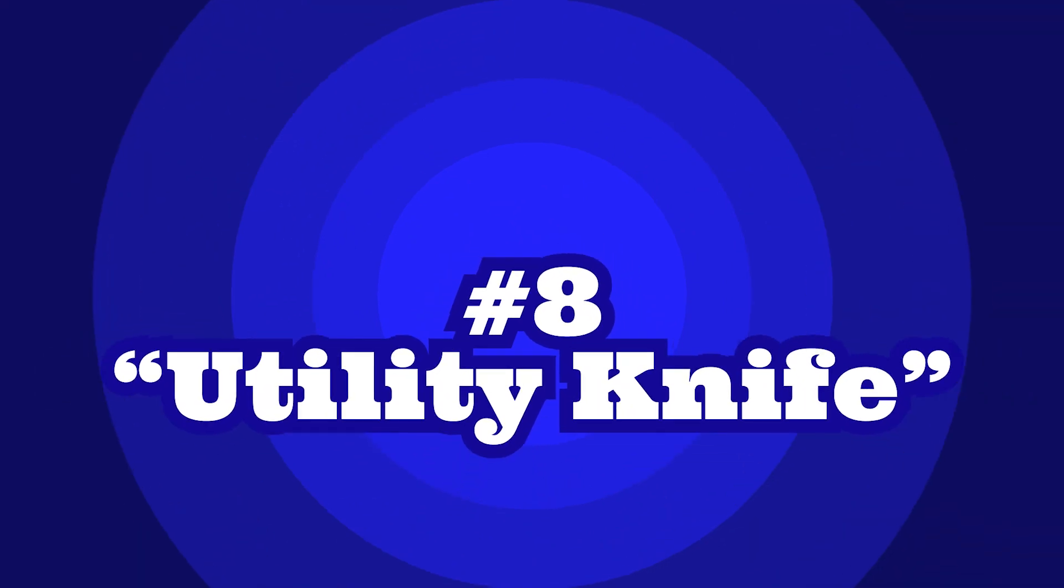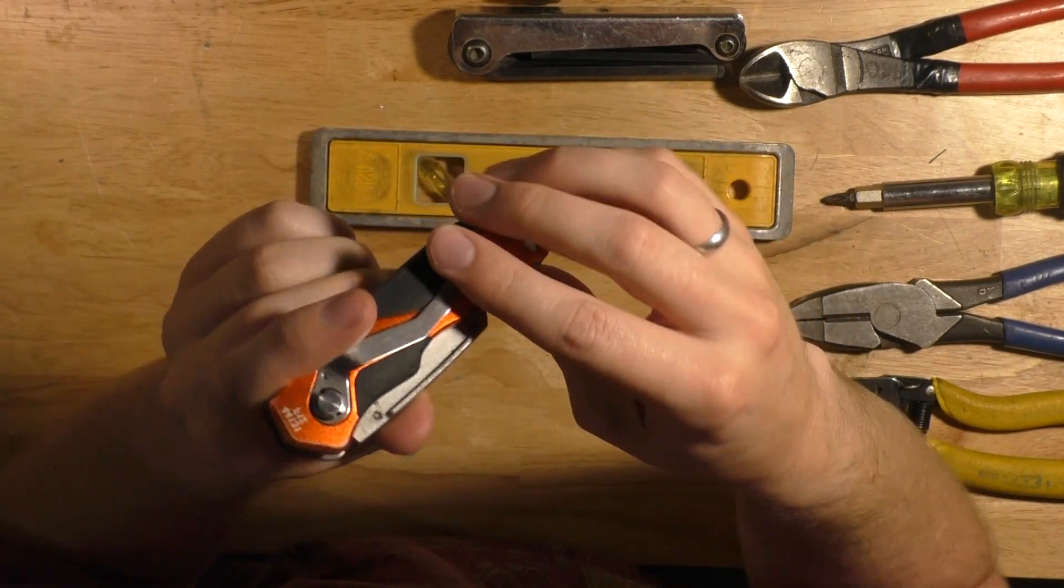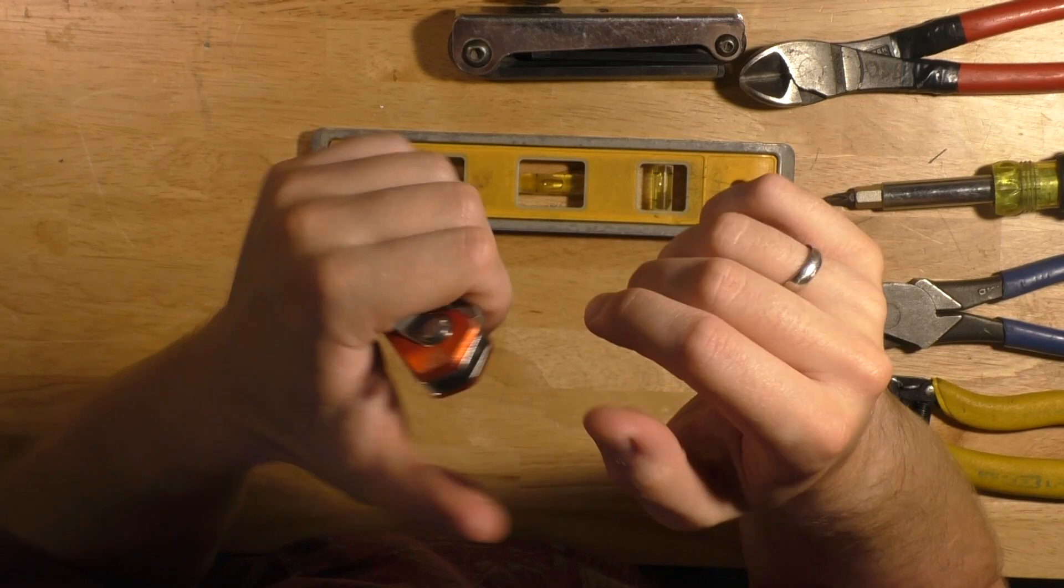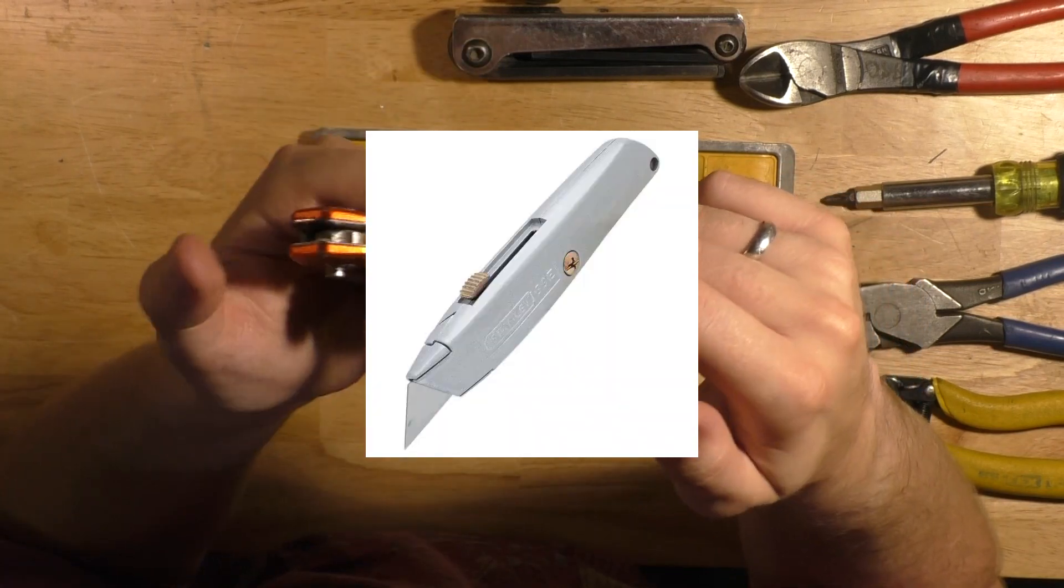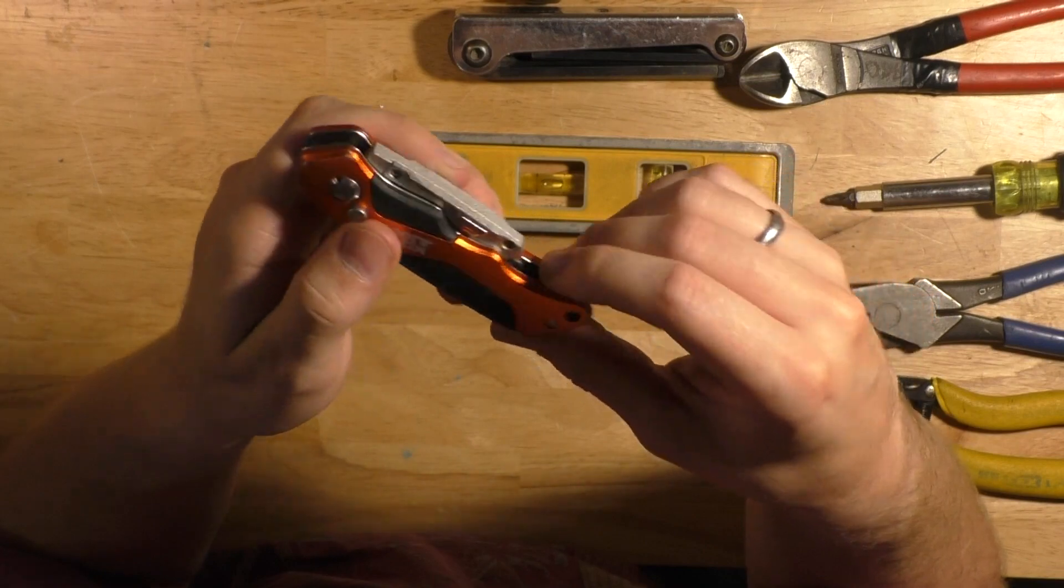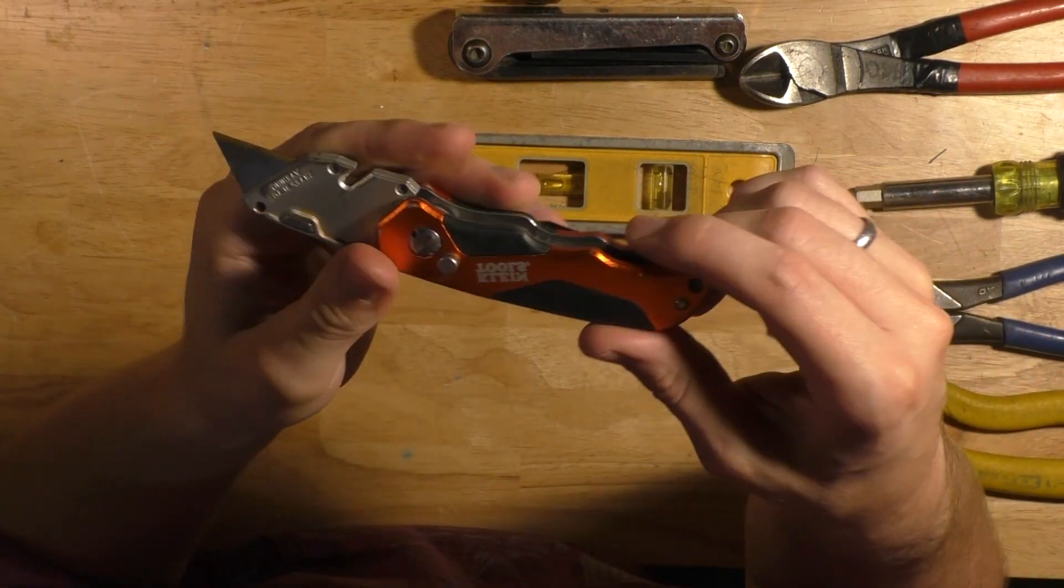Number eight on the list is a utility knife. My preference is a folding one that way you can keep it in your jean pocket easier and always have it on you. Some may prefer the ergonomics of a fixed utility knife that doesn't fold which is fine. You will be using your knife every day to open boxes, strip bigger wire, strip sheathing off of cable, what have you.